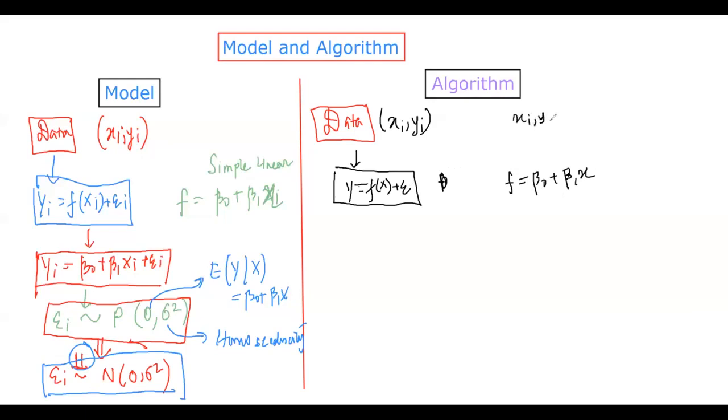But f here is beta naught plus beta one x. Here is xi comma yi, here is the f we're assuming. That is yi equals beta naught plus beta one xi plus epsilon i. This is a beautiful idea here. And then what comes up next? Next thing actually comes up is we have defined the model, epsilon follows zero comma sigma square and they're independent and all these things. These are the model part. So this is the model part.